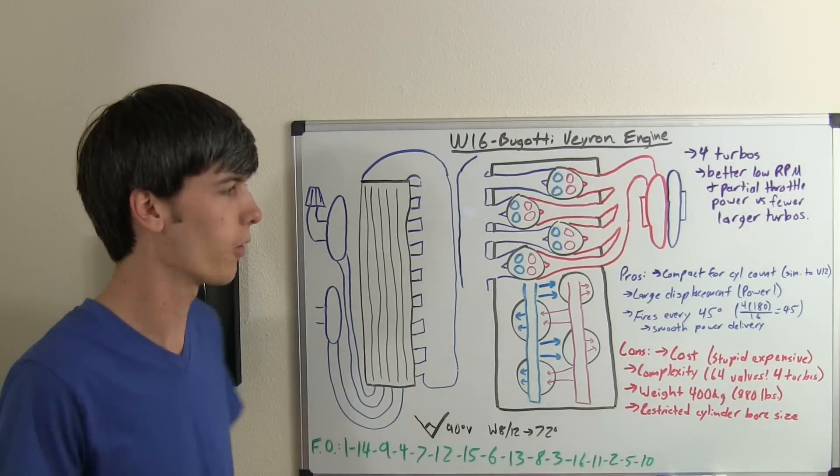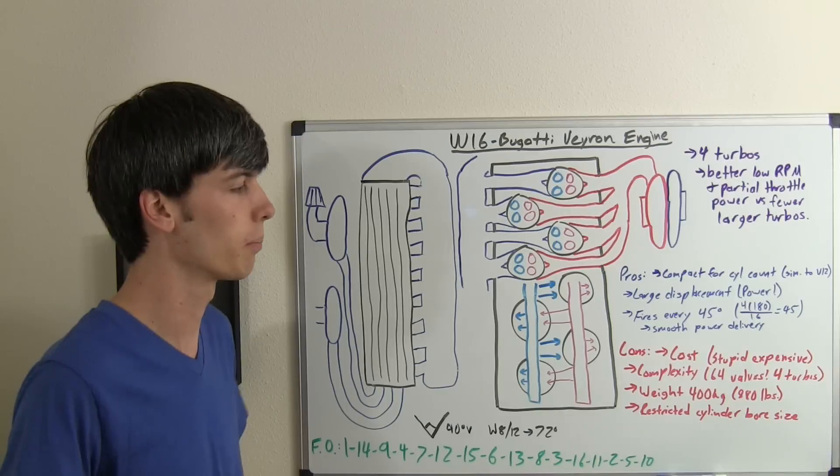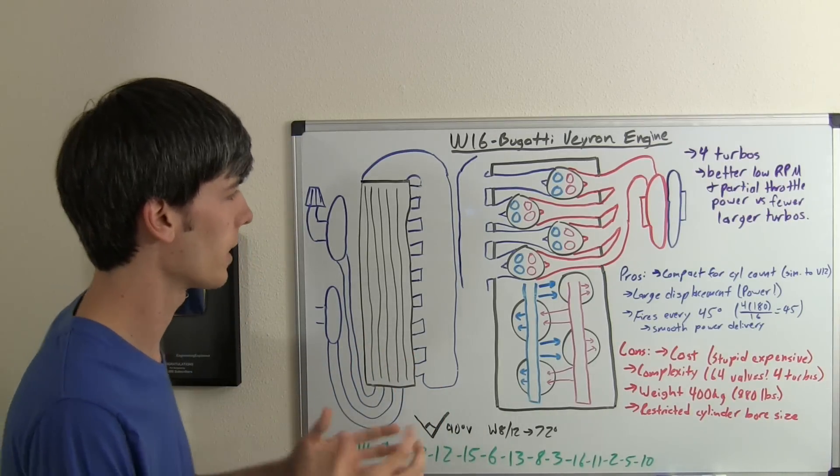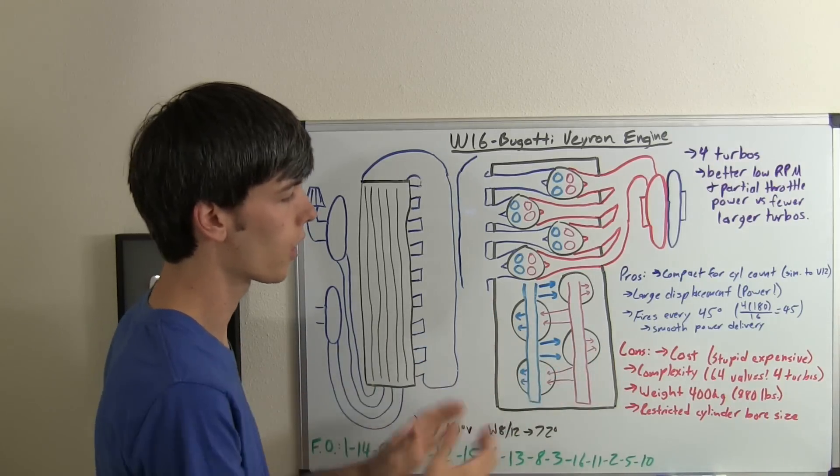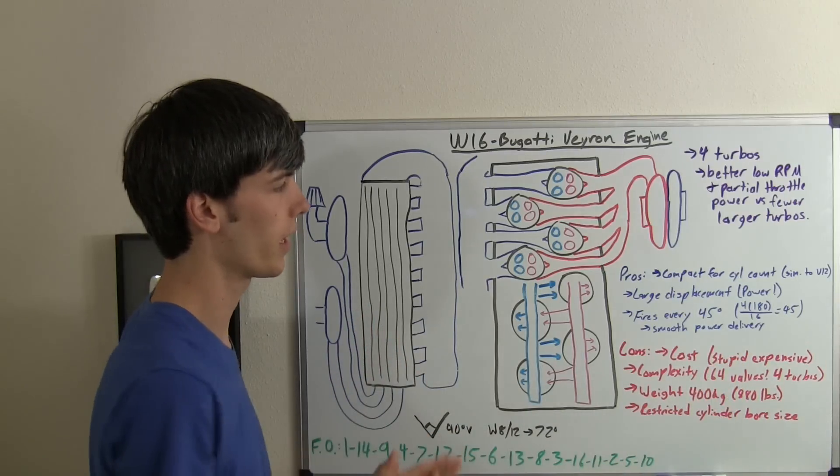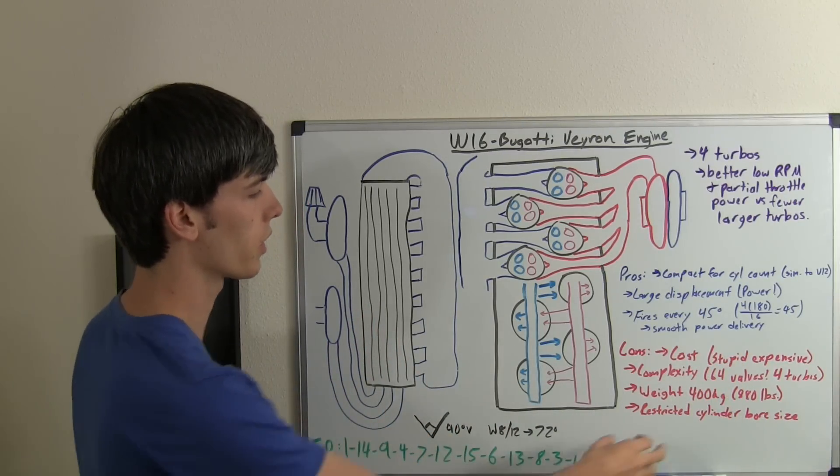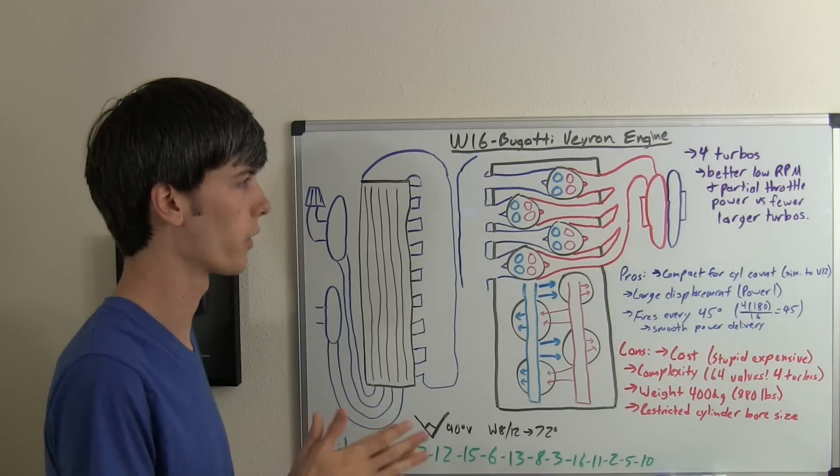It's making a lot of power, 1,000 horsepower, but it's also very heavy. And then restricted cylinder bore size. This is kind of a downside of the VR engine layout. Basically, your engine cylinders can only be so large before you have to increase the overall size of the engine, and you don't want to do that because you just keep adding weight. So typically, you're kind of restricted on your bore size, and you have to work with the stroke a little bit more than you usually would.